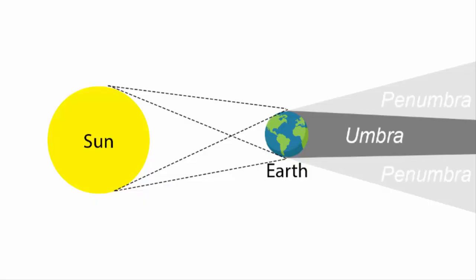Now when we say penumbral lunar eclipse, that means the earth is not fully blocking the sunlight for the moon. In other words, the sun, the earth and the moon are imperfectly aligned.